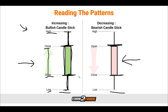Bullish candlesticks open at the bottom of the body and then close at the top of the body, and the wick tells us what happened during that period. Bearish candlesticks are just the opposite — the bearish opens at the top of the body and then closes at the bottom of the body, and the wick tells us more or less how excited price got throughout the trading day.